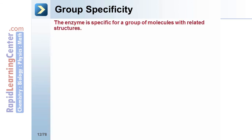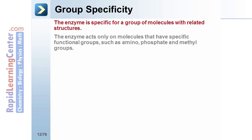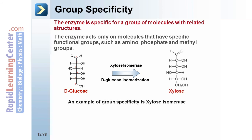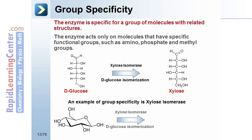Group specificity: The enzyme is specific for a group of molecules with related structure. The enzyme acts only on molecules that have specific functional groups such as amino, phosphate, and methyl groups. For instance, xylose isomerase is involved with glucose isomerization. Here we can see a schematic example of the isomerization that takes place due to the activity of xylose isomerase.